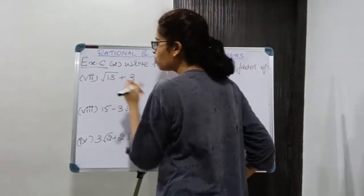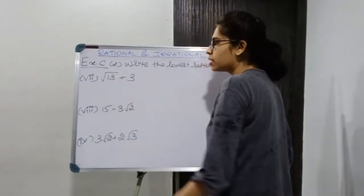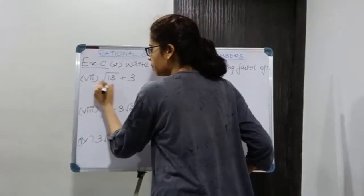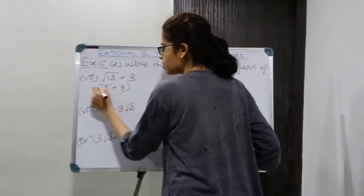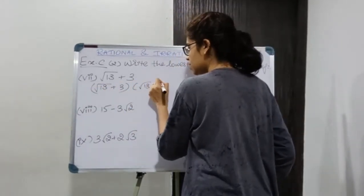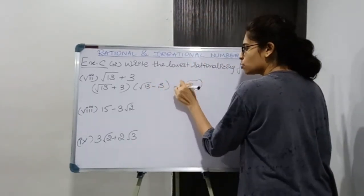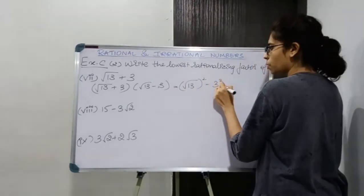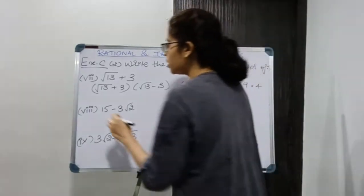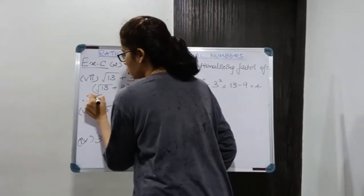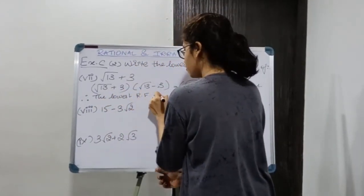Moving on to the next number: √13 + 3. I cannot take anything out of the root, so I multiply by the rationalizing factor. √13 + 3 multiplied by √13 - 3 gives (√13)² - 3² = 13 - 9 = 4, which is rational. So √13 - 3 is the lowest rationalizing factor.